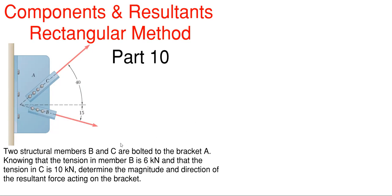What we have going on here is that we have two structural members B and C that are bolted together to the bracket A as shown. Knowing that the tension in member B is 6 kilonewtons and that the tension in C is 10 kilonewtons, we need to determine the magnitude and direction of the resultant force acting on the bracket between those two.